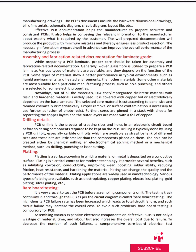The selected core material is cut and cleaned according to the panel size using chemical and mechanical methods. Proper removal of surface contamination is essential. The required pressure for lamination is 200 to 500 pounds per square inch. A temperature of 180 degrees Celsius is required for lamination of epoxy. Finally, we inspect the laminate for any discrepancy as per the design requirements.